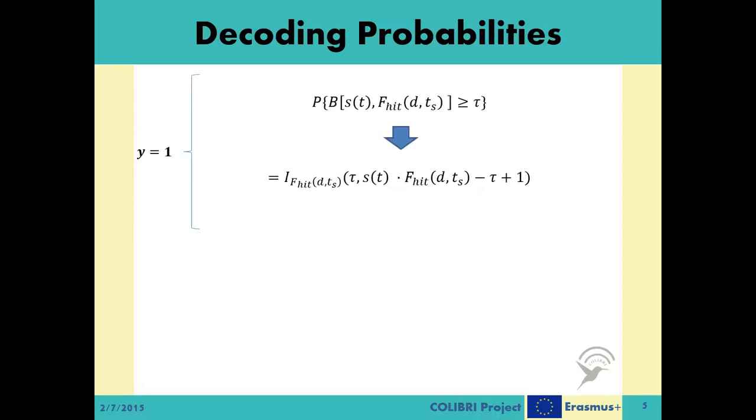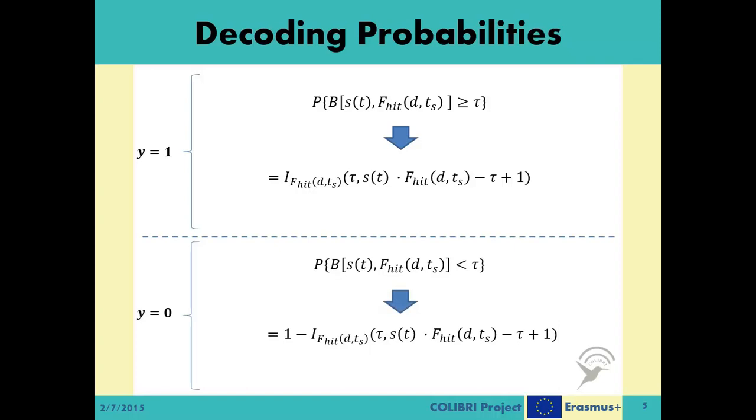Then, the decoding probabilities where y is equal to 1 can be converted into a regularized incomplete beta function, and the complementary decoding probability where y is equal to 0 becomes 1 minus the same regularized incomplete beta function.